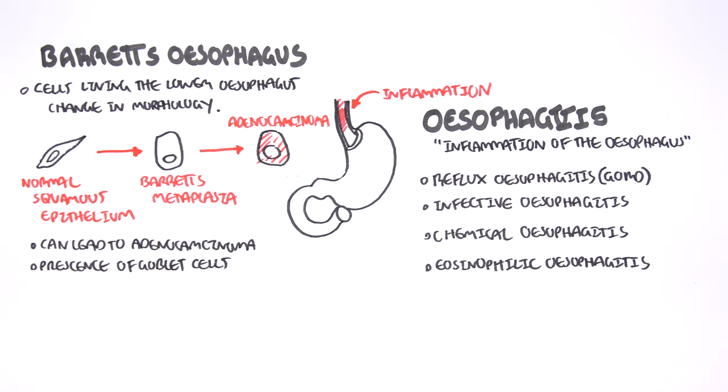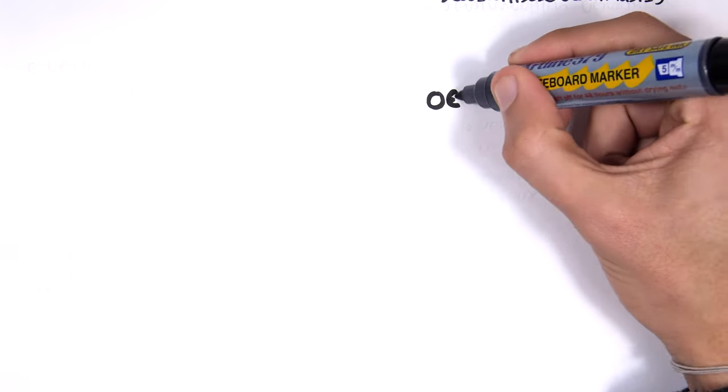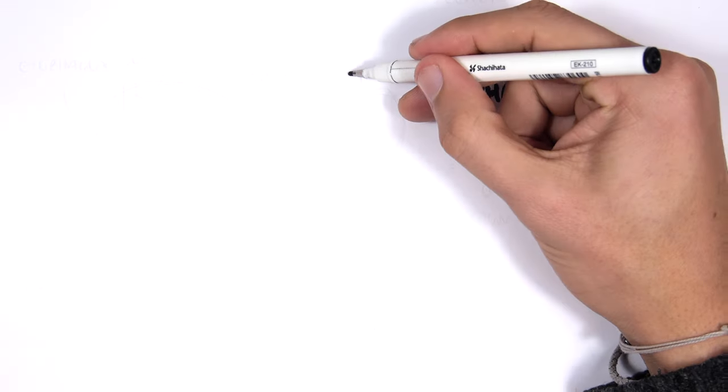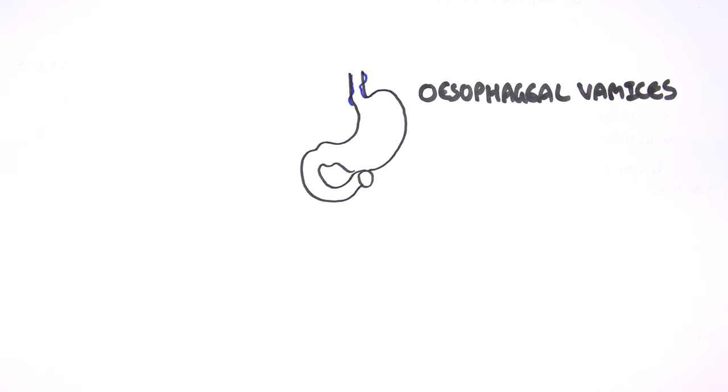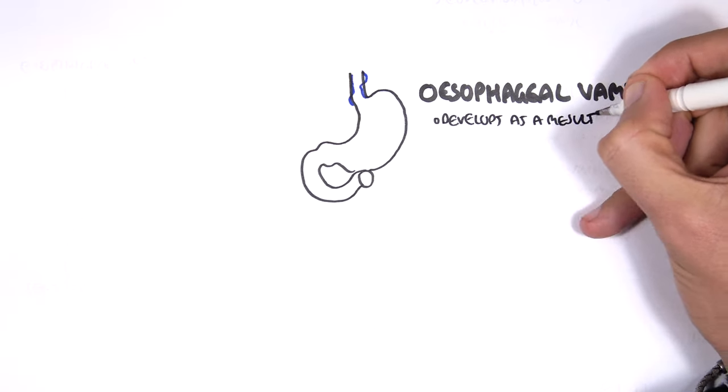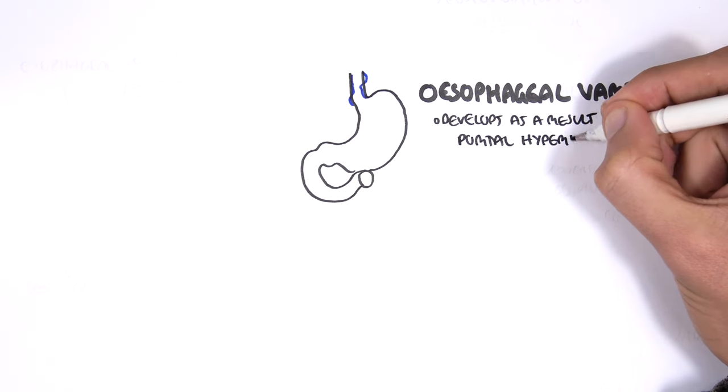The next condition is esophageal varices. Here we have the stomach again, and the veins around the stomach and esophagus. Esophageal varices develops as a result of portal hypertension, usually.